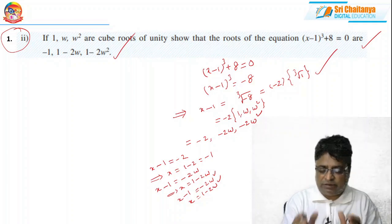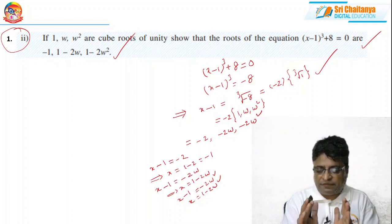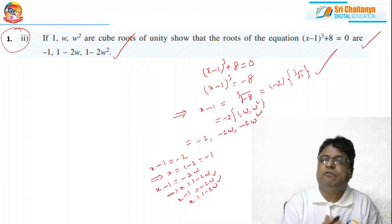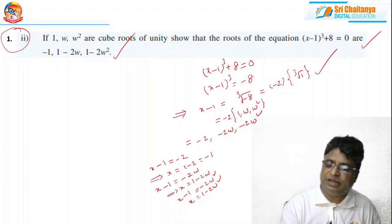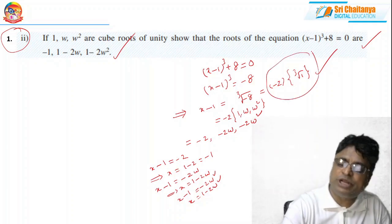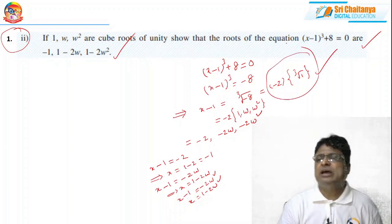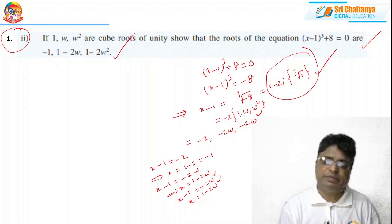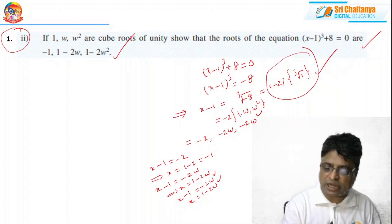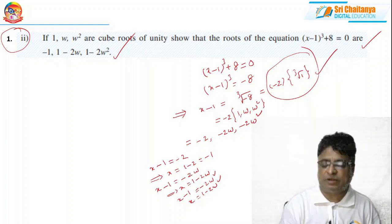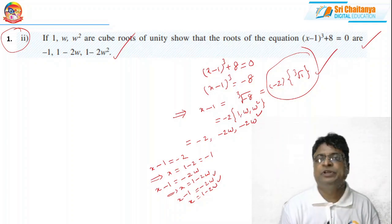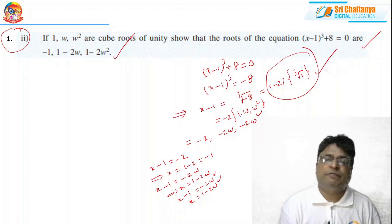Therefore x = −1, x = 1 − 2ω, and x = 1 − 2ω². The methodology — writing cube root of −8 as −2 times the cube root of 1 — is the golden step. The rest is algebraic manipulation. That is the concept; all other steps are well-known algebraic steps.